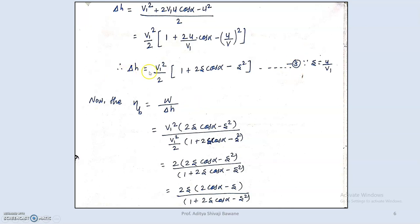Substituting work done and enthalpy drop into the blade efficiency formula: blade efficiency equals work done divided by heat drop across the stage. This gives v1 squared times (2s cos alpha − s squared) divided by (v1 squared over 2) times (1 + 2s cos alpha − s squared). The v1 squared terms cancel, leaving efficiency equals (2s cos alpha − s squared) divided by (1 + 2s cos alpha − s squared).